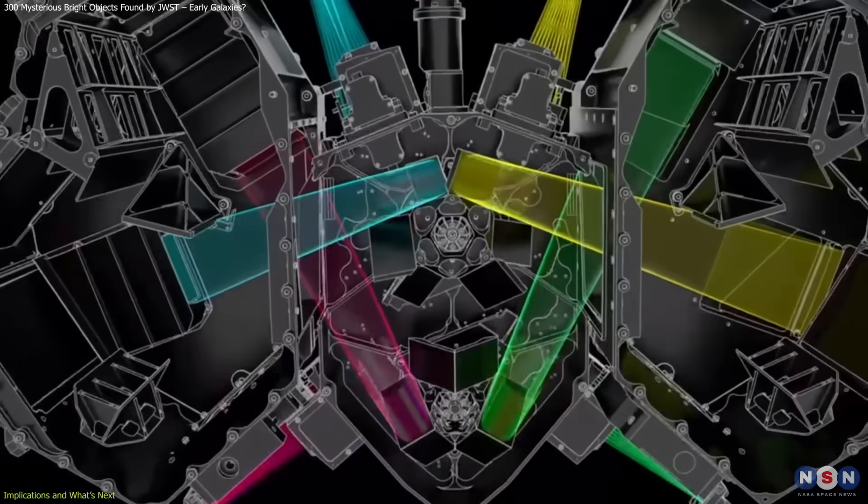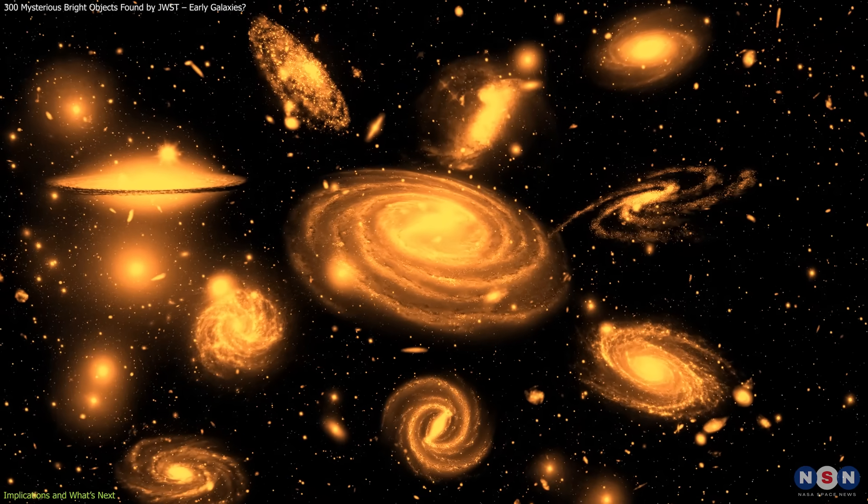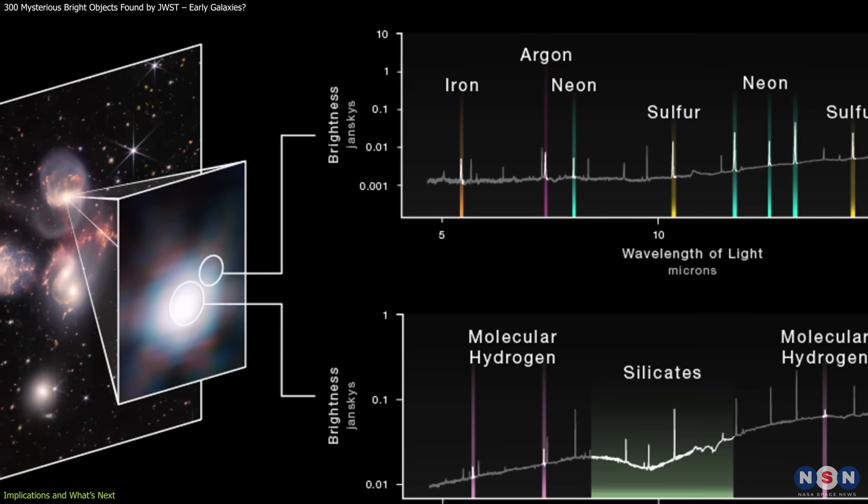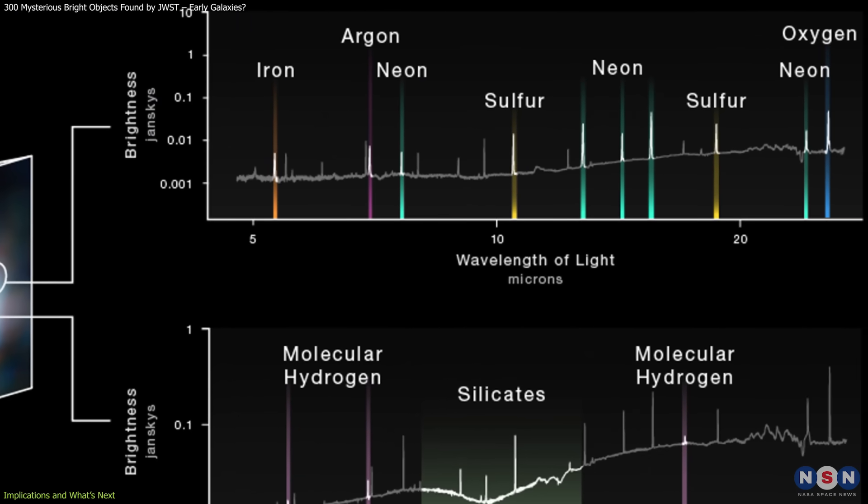By dispersing a galaxy's light into its component wavelengths, astronomers can identify distinct features, such as emission or absorption lines, that act as a fingerprint for redshift, chemical composition, and star formation history.